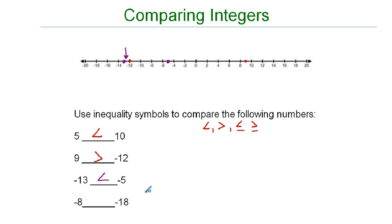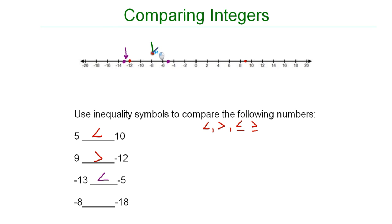The last one is negative 8 and negative 18. Here's negative 8 and here's negative 18. Negative 18 is farther away from 0, which means that it is smaller. So we can say that negative 8 is greater than negative 18.